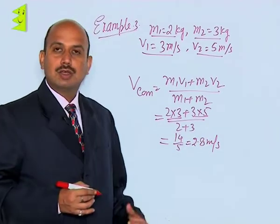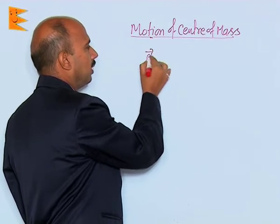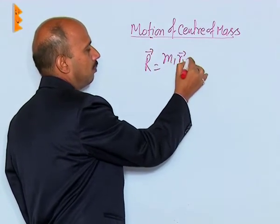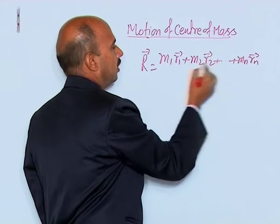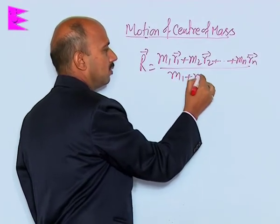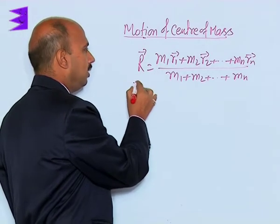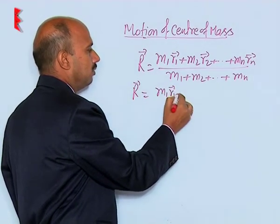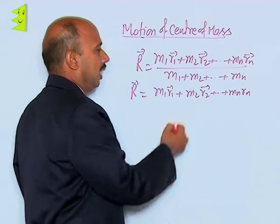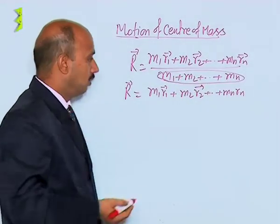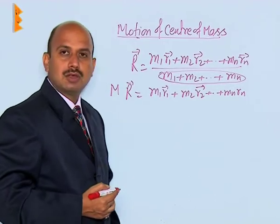So that is the speed of the center of mass. For the position of the center of mass, we have already done this formula: R = (m1R1 + m2R2 + ... + mNRN) / (m1 + m2 + ... + mN). This whole denominator can be replaced by total mass M, where capital M equals m1 + m2 + ... + mN.